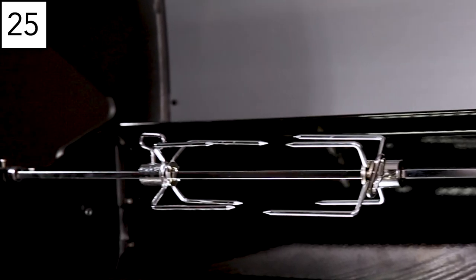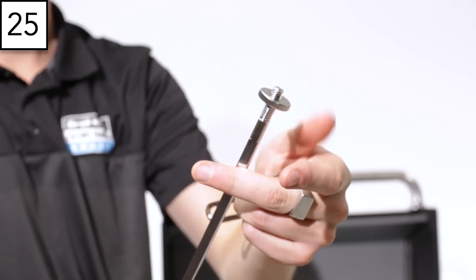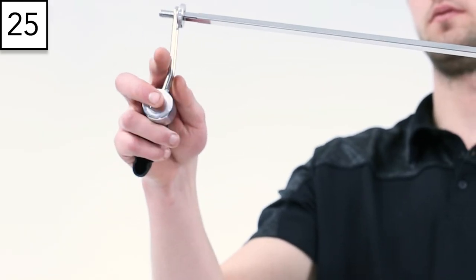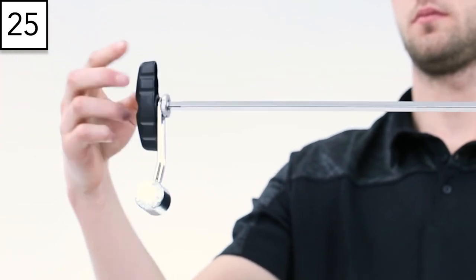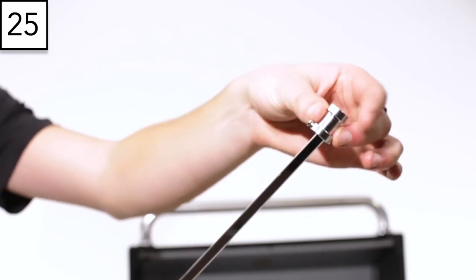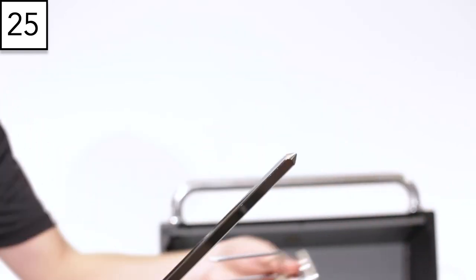To assemble the rotisserie rod, thread the washer onto the rod. Put the counterbalance weight on the spit rod and secure it with the handle. Install the collar on the end of the spit rod. Place the forks on the spit rod and tighten in place.